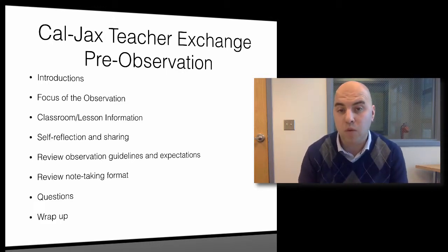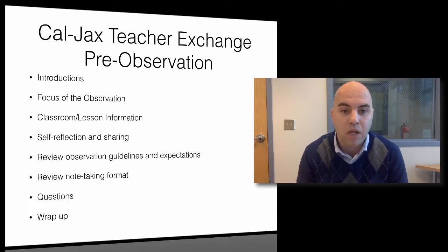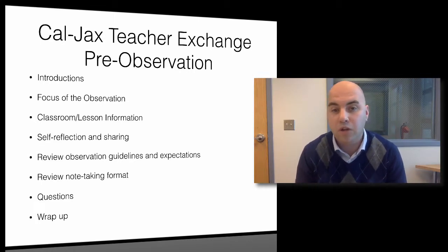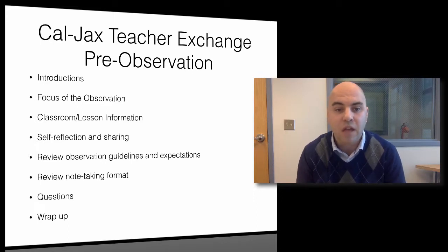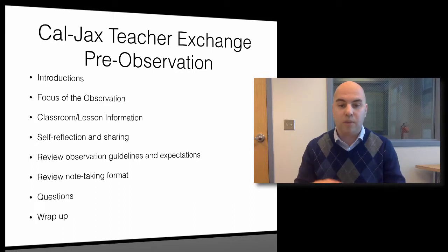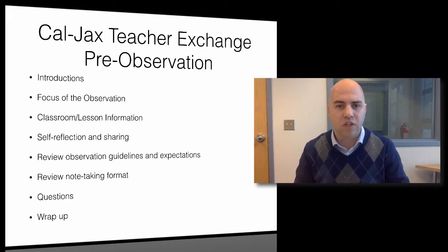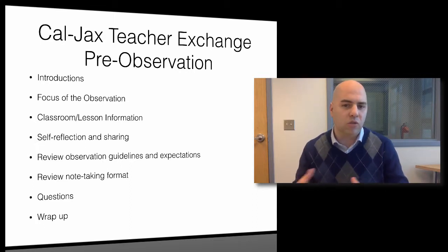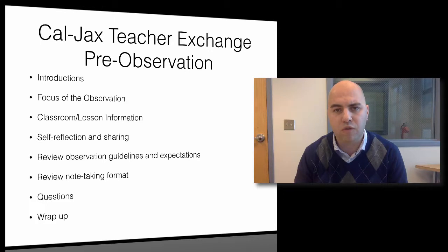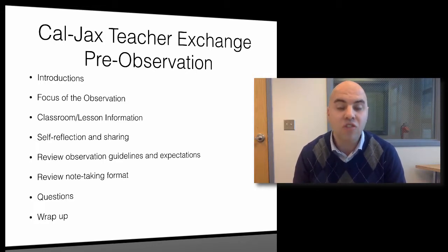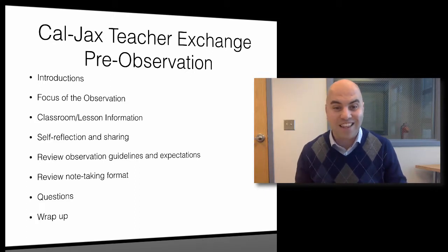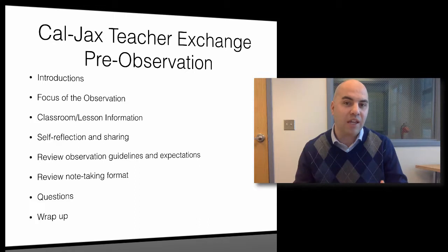You'll need to give some background on the classroom — what to expect with students and what the lesson will be about. Give them a chance to talk a little bit about what they've done in the past in their own classroom, do some self-reflection, and share their ideas and what they'd like to get out of this. It'll be really important to go over observation guidelines and expectations — little things like turning off your cell phone, and whether it's okay to interact with students. You'll also need to go over the note-taking format. These notes are only for them — they're not getting graded.